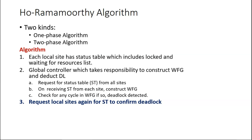The deadlock is detected in a different color at the third step, which does not happen in the one-phase algorithm — it only happens in the two-phase algorithm. Once the first wait-for graph is constructed and a cycle is found, the global controller detects a deadlock but it is not yet confirmed. So it requests again, sometime later, it again requests the status table to confirm the deadlock.